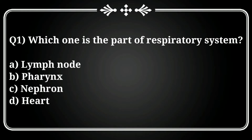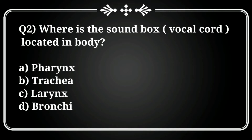Question 1: Which one is a part of the respiratory system? Options: A) Lymph node, B) Pharynx, C) Nephron, D) Heart. The correct answer is option B, Pharynx. The pharynx includes the nasopharynx, oropharynx, and laryngopharynx — these are the three types of pharynx.